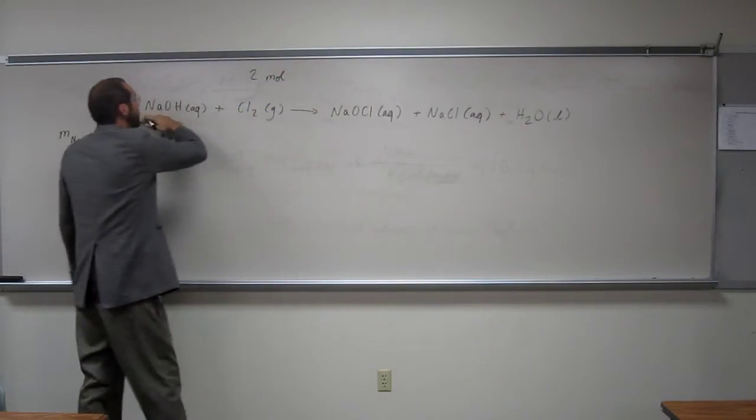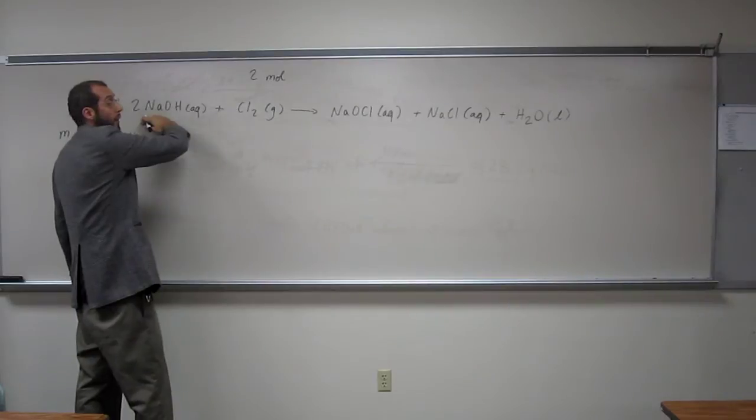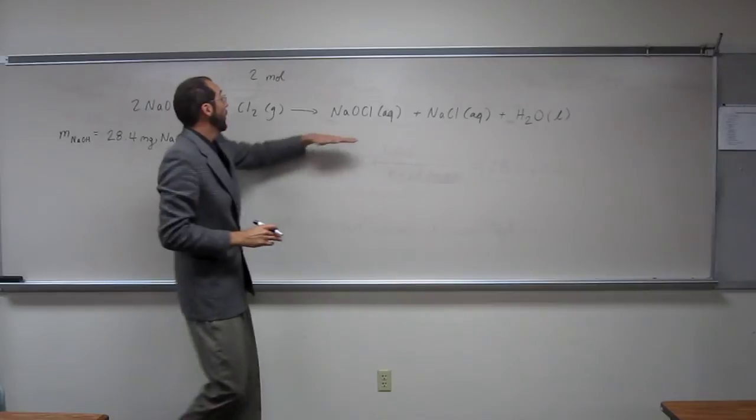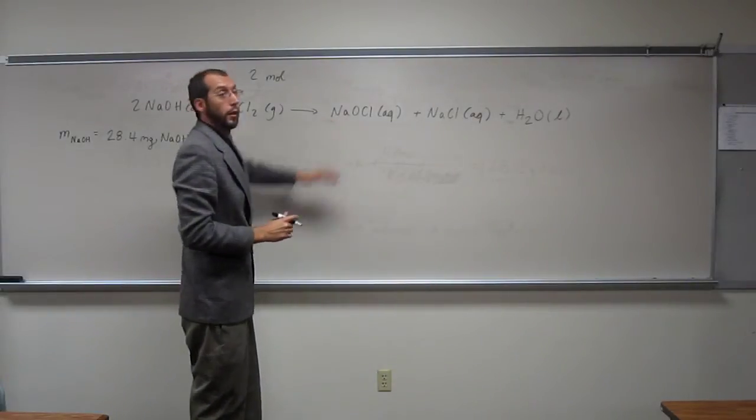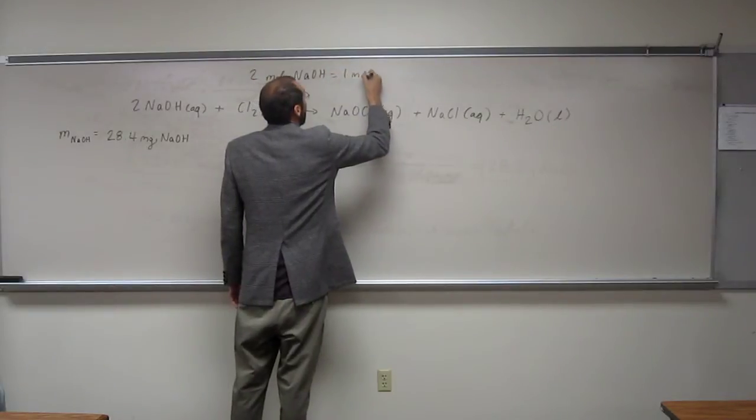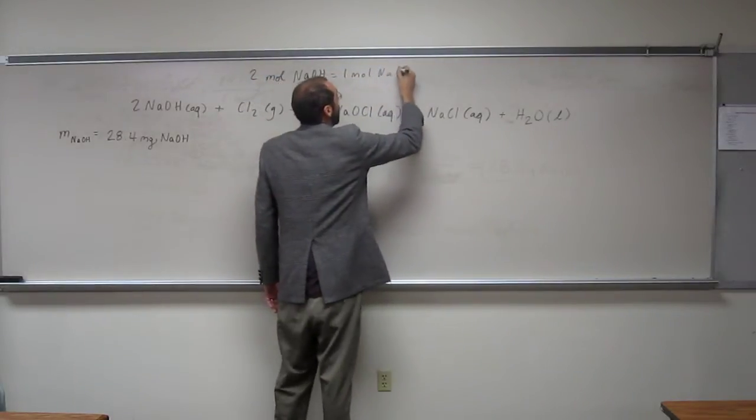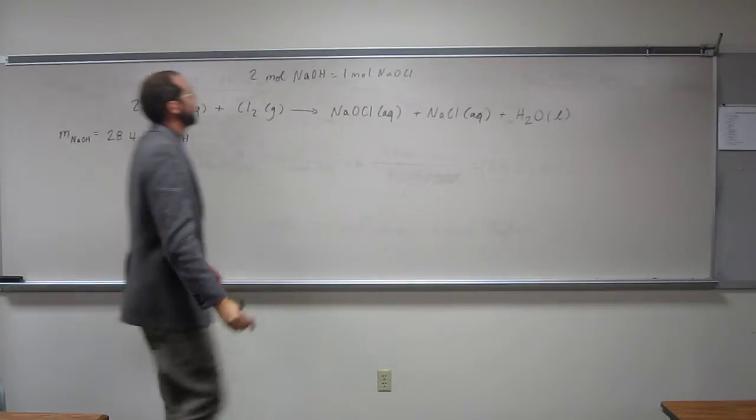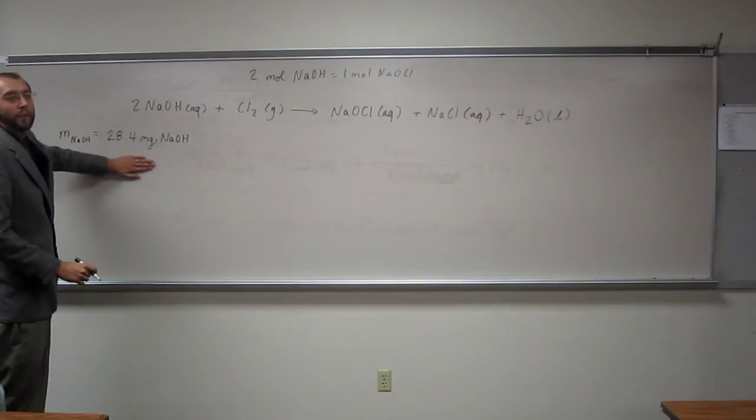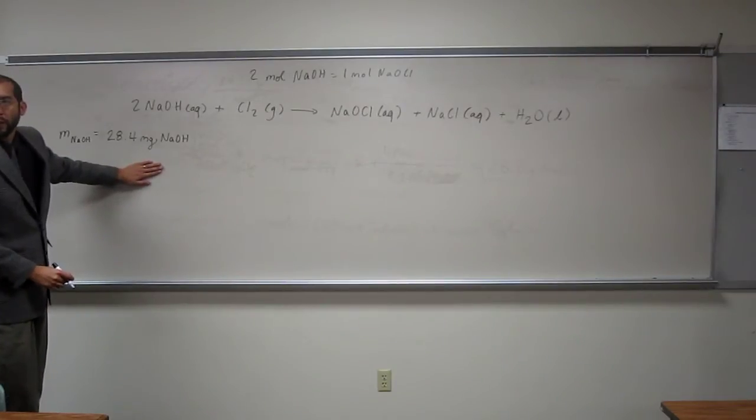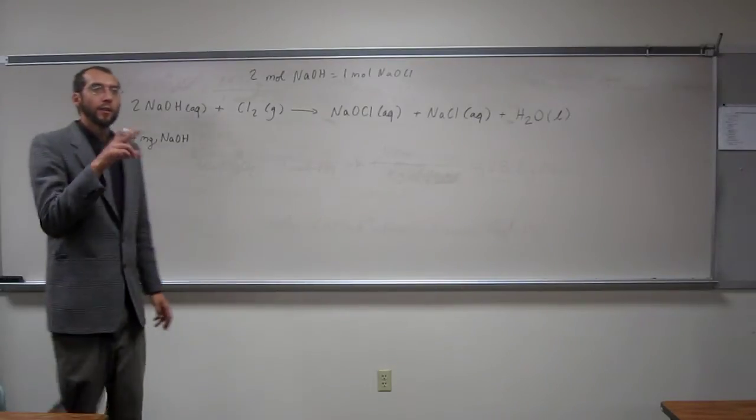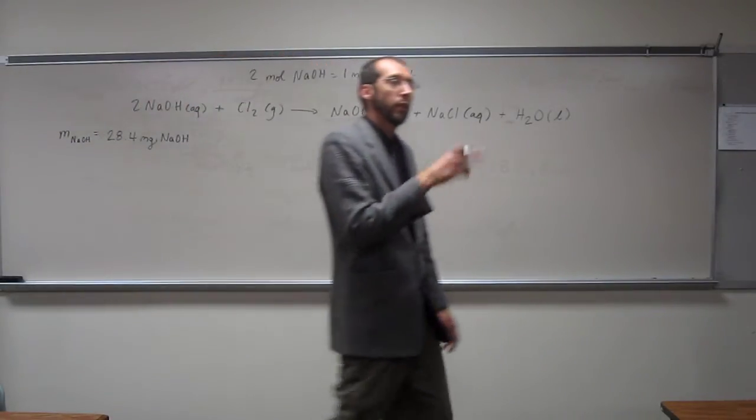So for every two moles of sodium hydroxide that we get, if we have a maximum yield, that means 100% goes to product, right? We'll have one mole of the sodium hypochloride. Well, we've been presented with milligrams, which is a mass, but we've got to convert that to moles. And we know a mass to mole conversion, which is called the molar mass.